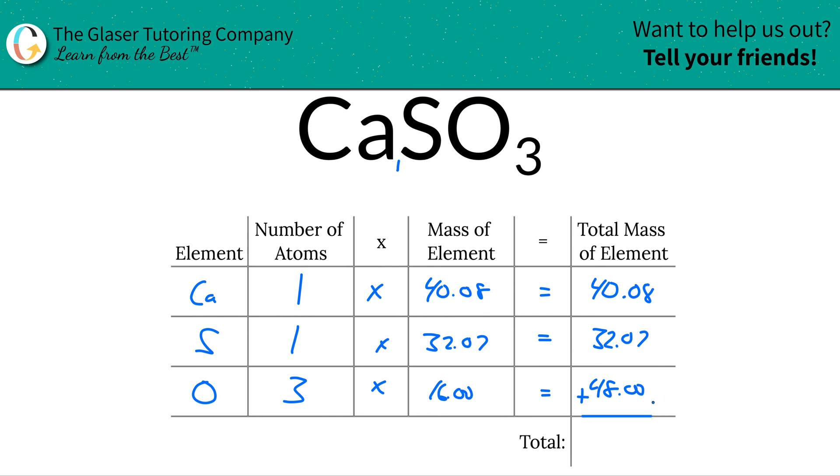And then all we're simply going to do is just add them together now to find now the total mass of the entire compound. So when we do that, it works out to be about 120.15. And since we're solving for molecular mass, the units here are in terms of AMU.